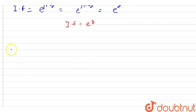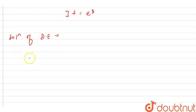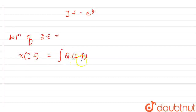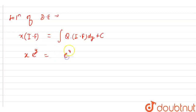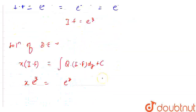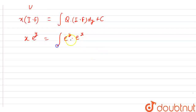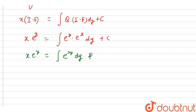Now I am writing the solution of the differential equation. The solution is given by: integrating factor times x equals the integration of Q times integrating factor dy, plus c. So it is x times e raised to the power of y equals the integration of e raised to the power of y times e raised to the power of y dy plus c, which gives x times e raised to the power of y equals the integration of e raised to the power of 2y dy plus c.